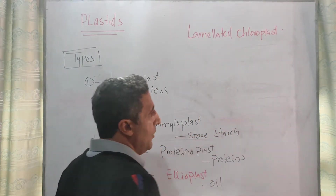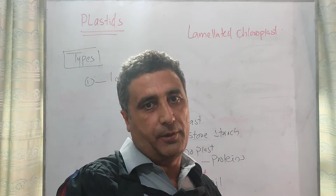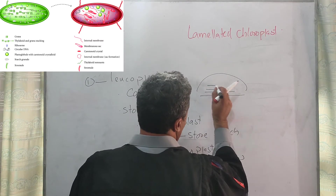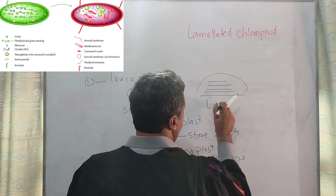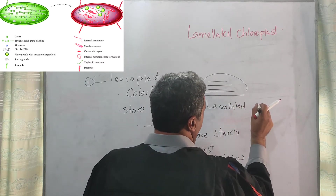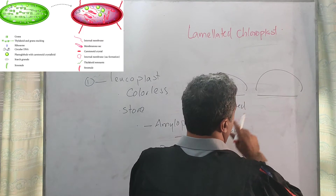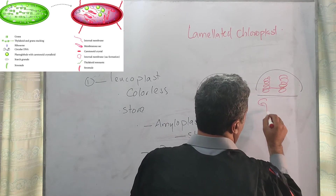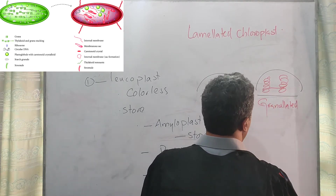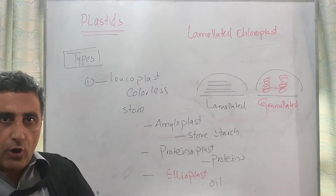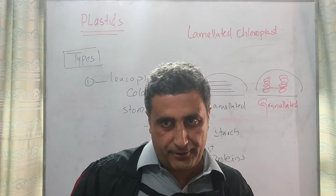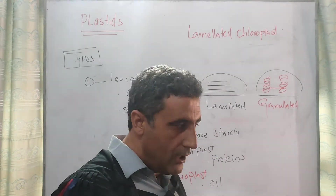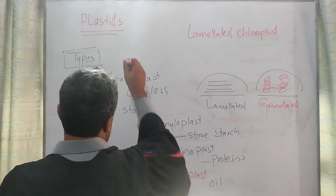These are also known as lamellar plastids. On the basis of morphology, a type of chloroplast which contains only lamellae is known as a lamellar chloroplast. And the type of chloroplast or plastid which contains grana is known as granulated chloroplast. On the basis of function, they may be different. All types of chloroplasts arise from the proplastid.